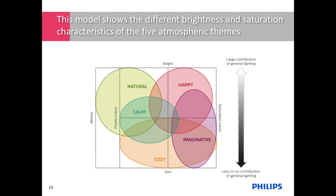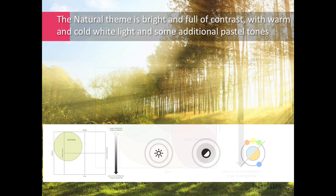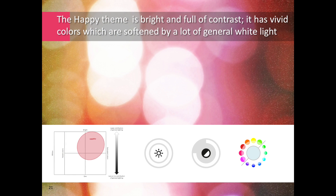I will now go through each of the themes individually. The Natural theme is bright and full of contrast of light and shadow to create liveliness. It plays with warm and cold white light combinations and some additional pastel tones. The Happy theme is also bright, but uses more vivid colors which are softened by the large contribution of general white light. There is also play with contrast of both light and shadow and color.